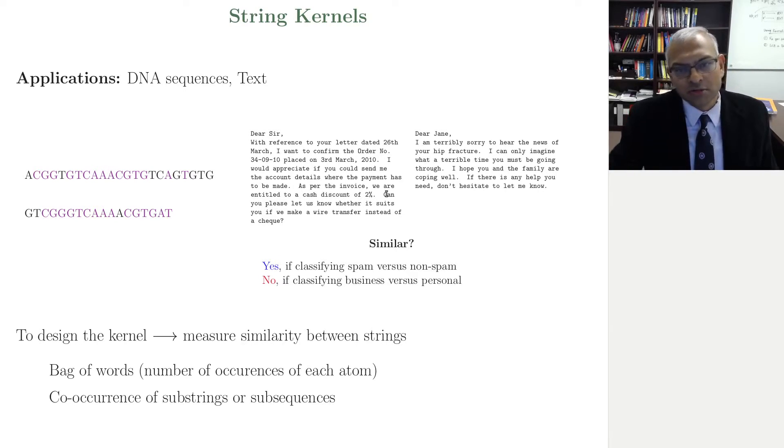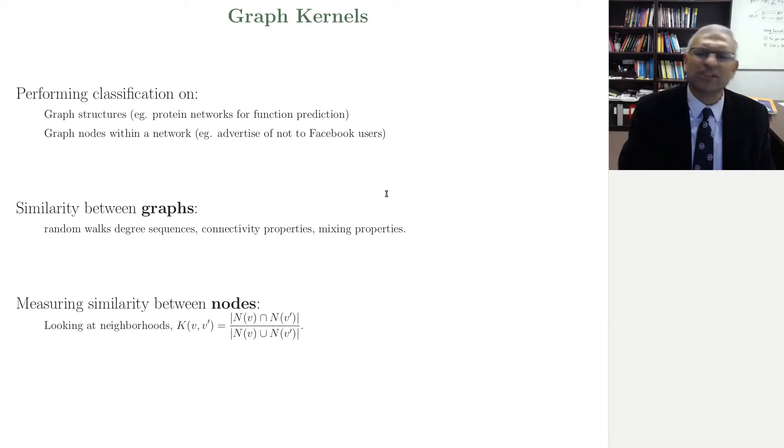Let's look at classification problems on graphs, just to show you that it's effortless now to work in any domains you want, as long as you can get me a measure of similarity for your classification problems. Here are examples of classification problems involving graphs. Protein networks. And I give you protein networks and I ask you, do they perform the same function? Or nodes within a network. So you have this huge Facebook and here's a node, and I can represent a node by, let's say, its neighborhood or its two neighborhoods, where by neighborhood we mean friends.